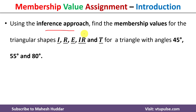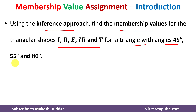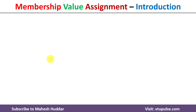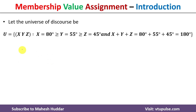We need to use the inference method to find the membership value for different triangular shapes, for a triangle with angles 45 degrees, 55 degrees, and 80 degrees. First, we will define the universe of discourse.